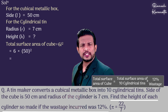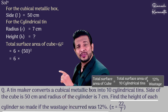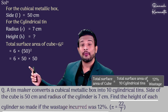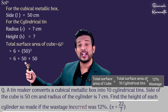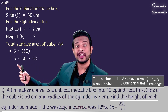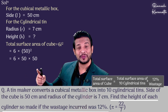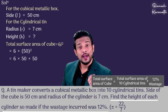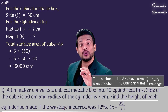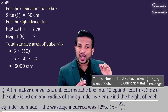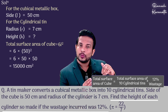We will find the total surface area of the cube. The formula is 6L². We know L = 50 cm. So we substitute: 6 × 50² = 6 × 50 × 50. Now 50 × 50 = 2500, and 2500 × 6 = 15,000. Therefore, the total surface area of the cube is 15,000 cm².